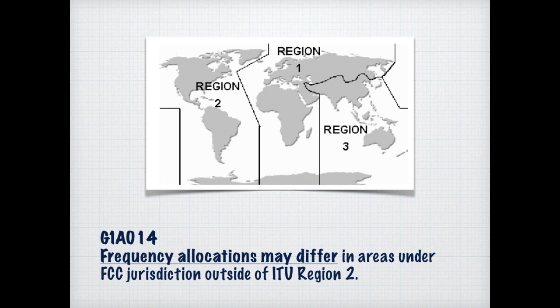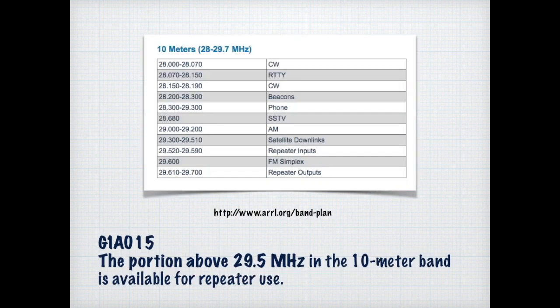Frequency allocations vary from ITU region to another, so what is permissible in Region 2 may not be permissible in Region 1 or 3. When operating in our region we adhere by our rules, but if we travel and operate in others, we have to obey their rules. Earlier we discussed that some frequencies were allocated for specific purposes — in the 10 meter band, it's often used for repeaters, and from 29.5 megahertz and above it could be used by a repeater, so we don't want to interfere with repeater operation.